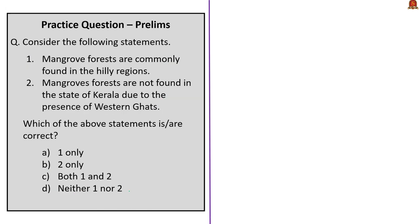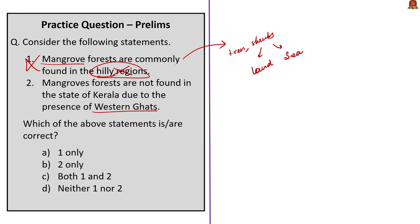The second question is based on mangroves. Statement one states that mangrove forests are commonly found in hilly regions. This is wrong — mangroves occupy the boundary between land and sea and are not found in hilly regions. Statement two states that mangrove forests are not found in Kerala due to the presence of the Western Ghats. This is also wrong — Kerala is not entirely covered by Western Ghats, and other parts can have mangrove forests. Our discussion today was specifically about conservation of mangroves in Kerala. Since neither statement is correct, the final answer is: neither one nor two.